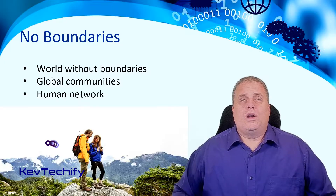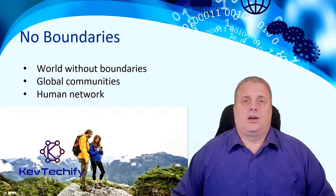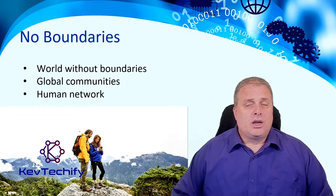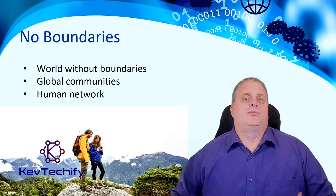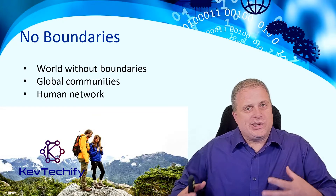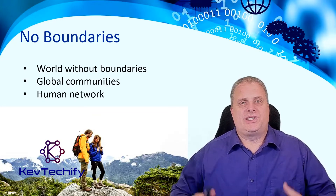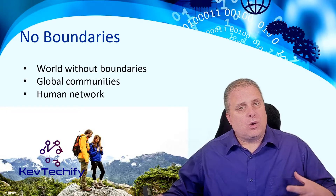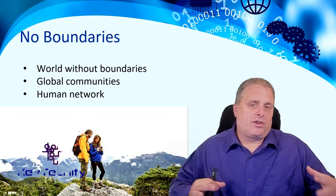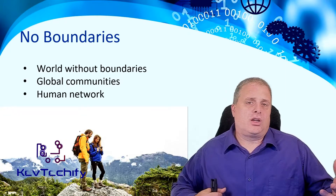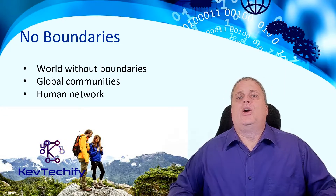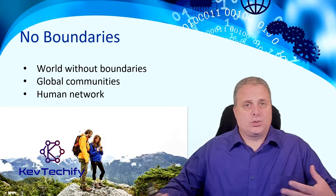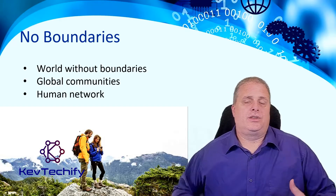One of the ideas here is that networks don't have boundaries. Prior to networks, there were boundaries. Countries had boundaries. States had boundaries. We were bound by oceans, by rivers, by lakes, by latitudes and longitudes. We were bound by lines drawn in the sand, and that's where a lot of us stop.